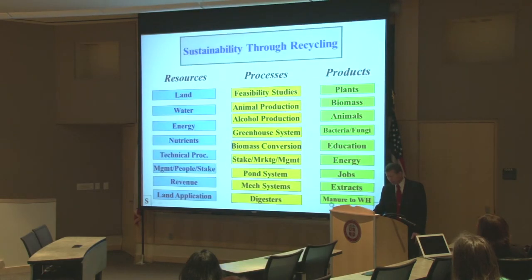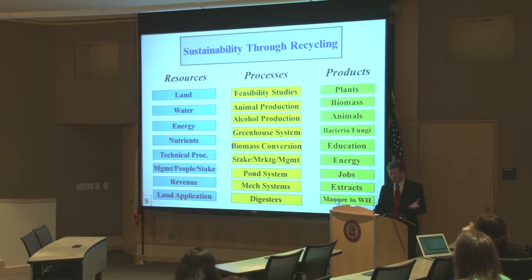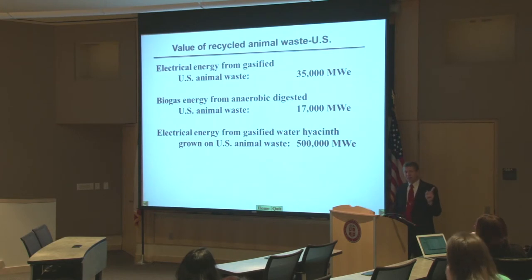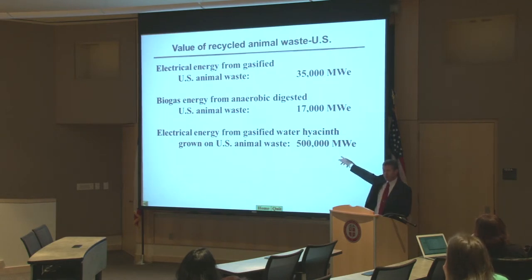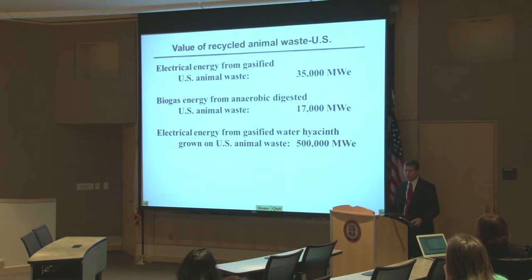Let's go back to potential. We have a lot of waste being produced by different animals. If I take the waste and go directly to gasification, I can get 35,000 megawatts of energy. If I produce methane gas, I can get about 17,000 megawatts. But if I take that same waste and recycle it to grow water hyacinths only, I have enough energy to produce 500,000 megawatts. That is the potential that's out there — and think about how much CO2 is being consumed in this process.